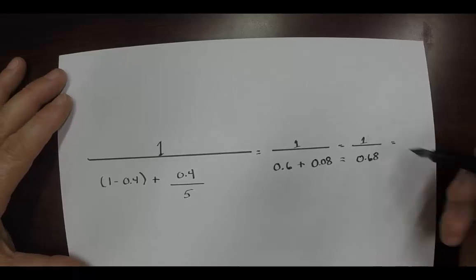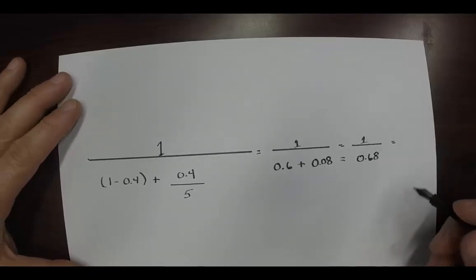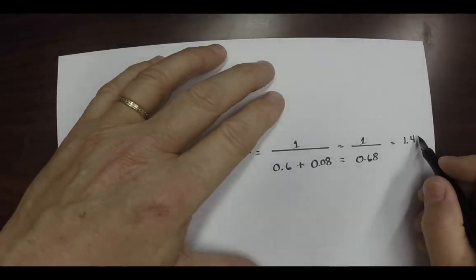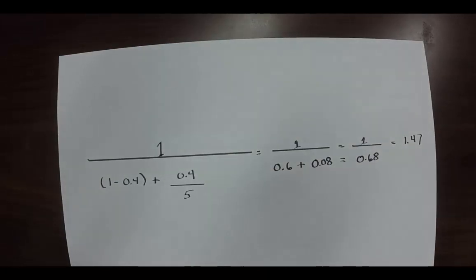Now we do the division. Zero point six eight goes into one point four seven, and that is the overall speed up of the CPU, is one point four seven times. Okay, not five times, one point four seven.